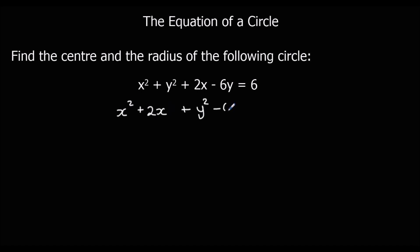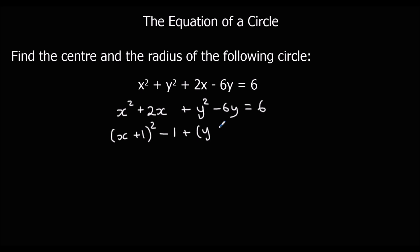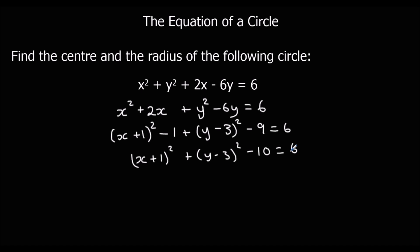I'm going to gather the y's together: y squared minus 6y. Now we have to complete the square. For the x terms, we put it into a bracket: x plus 1 squared. We half the x coefficient — the coefficient is 2, halved gives 1 — and then take away 1 squared, which is 1. For the y's, we half the y coefficient to get minus 3, and take away that squared, which is 9.